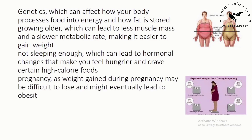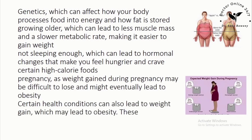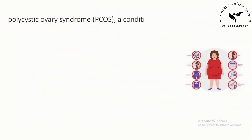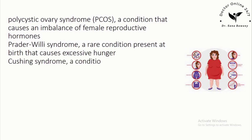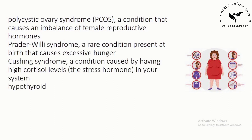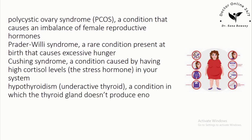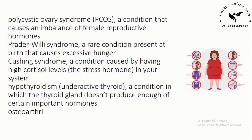Certain health conditions can also lead to weight gain and obesity. These include: Polycystic Ovary Syndrome (PCOS), a condition that causes an imbalance of female reproductive hormones; Prader-Willi Syndrome, a rare condition present at birth that causes excessive hunger; Cushing Syndrome, caused by high cortisol levels — the stress hormone — in your system; Hypothyroidism (underactive thyroid), where the thyroid gland doesn't produce enough of certain important hormones; and Osteoarthritis (OA) and other conditions that cause pain, which may lead to reduced activity.